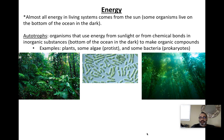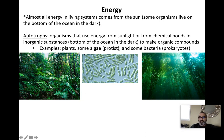Organisms that can produce their own food, either using photosynthesis or chemosynthesis, are called autotrophs. The autotrophs are plants, algae — which are seaweeds — and some bacteria are also autotrophs. Green bacteria do not have chloroplasts, but they can do photosynthesis.